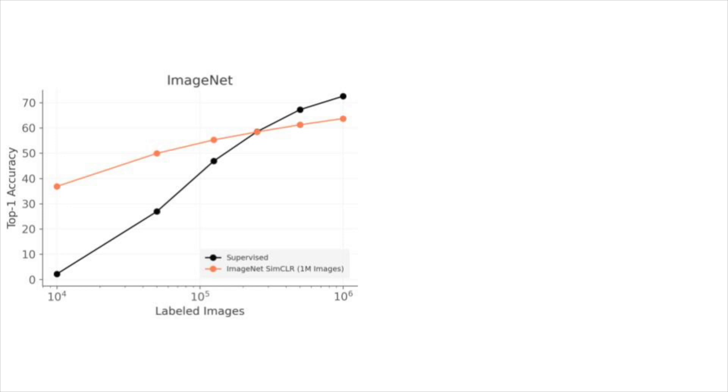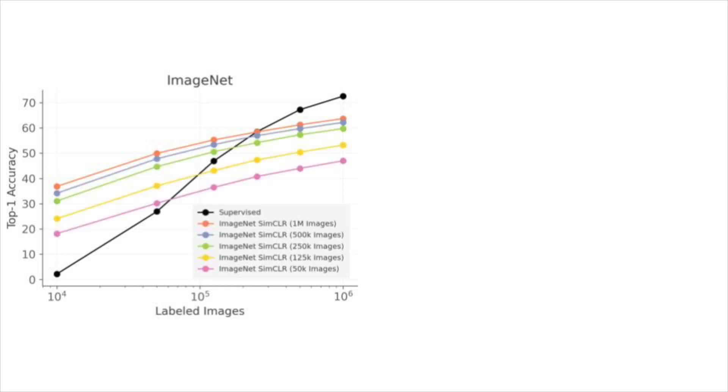If we don't have much supervision available, we can train a linear classifier on self-supervised features. We can repeat this analysis with less unlabeled pre-training data, which reduces performance. Self-supervised learning only gets close to fully supervised performance when lots of labels are available. When we have few labels, performance is nowhere near fully supervised.